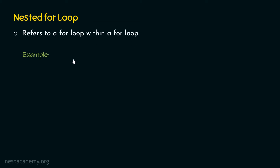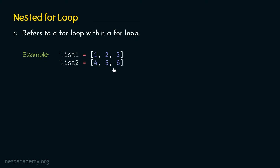Let's say we have two lists: List1 and List2. List1 is equal to [1, 2, 3], meaning it contains three items: 1, 2, and 3. List2 is equal to [4, 5, 6], meaning it contains three items: 4, 5, and 6. So now we have two lists, List1 and List2.